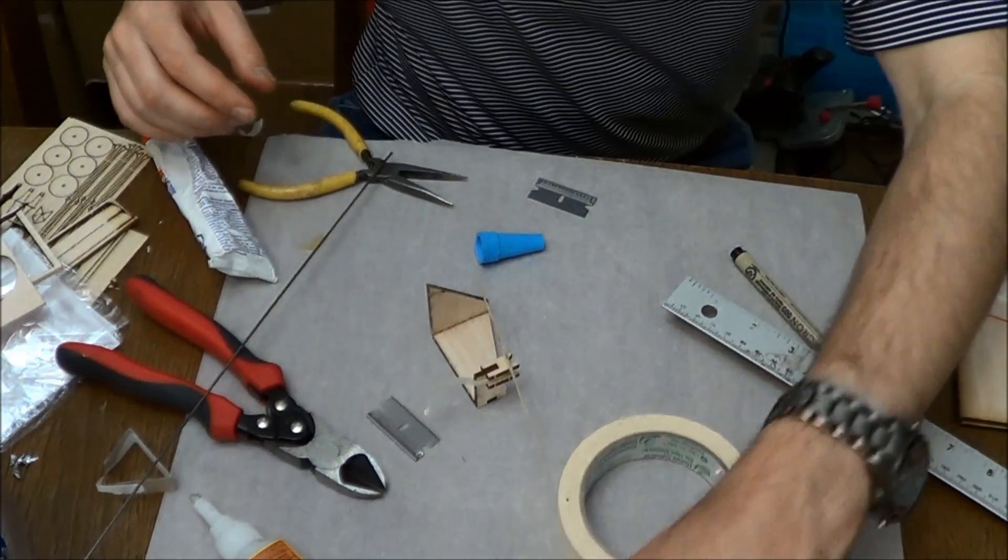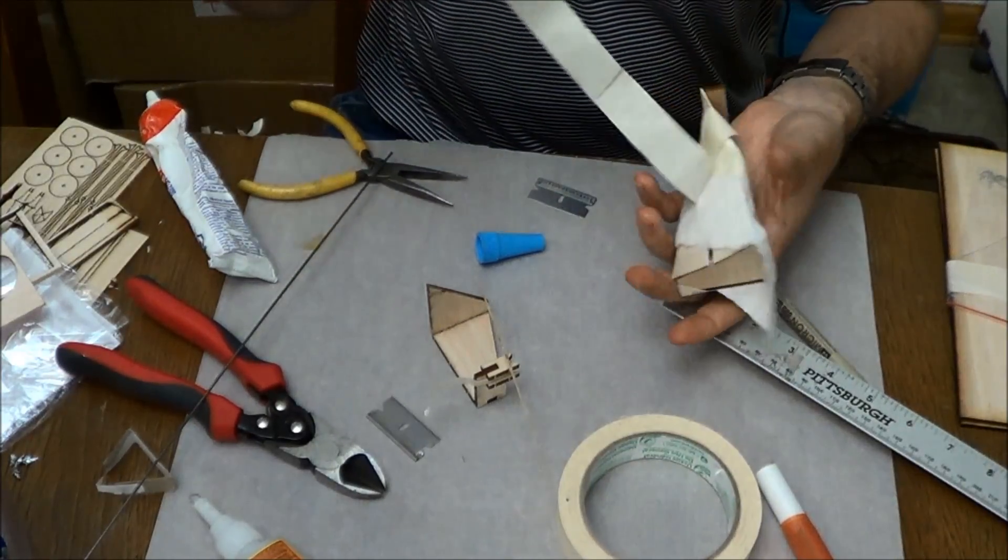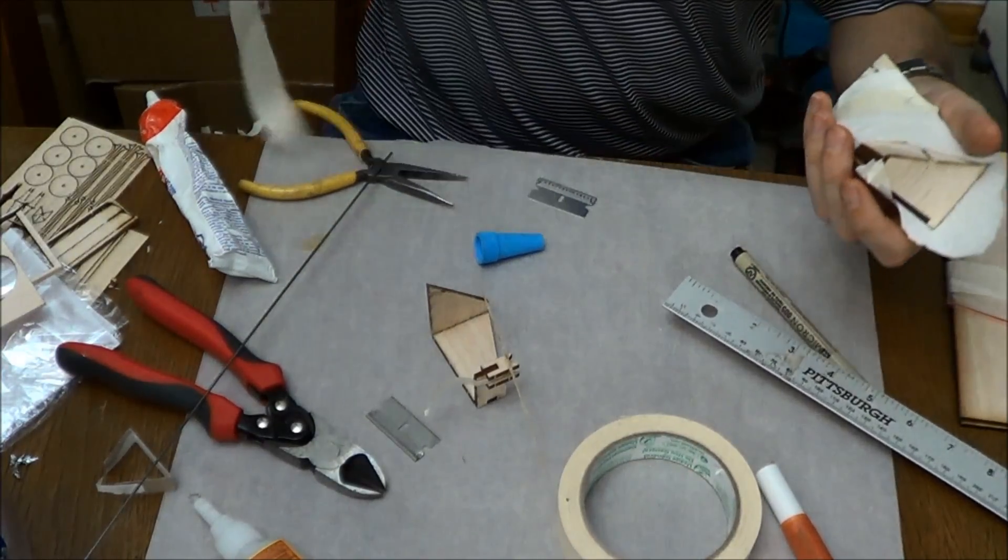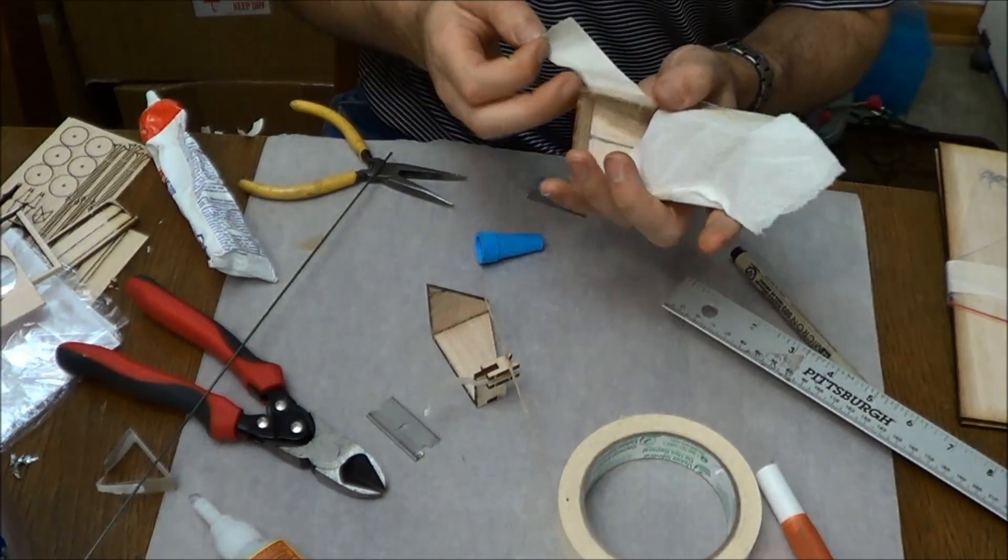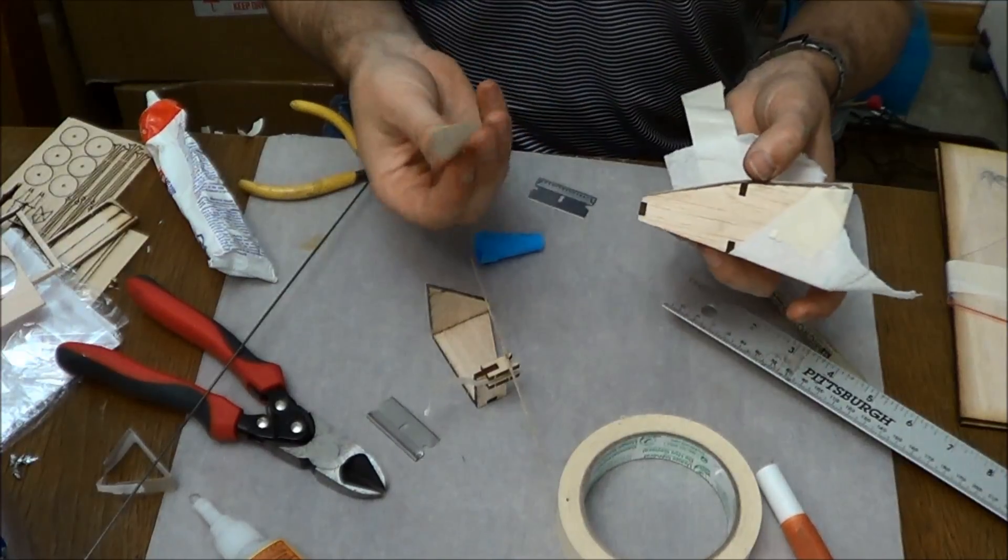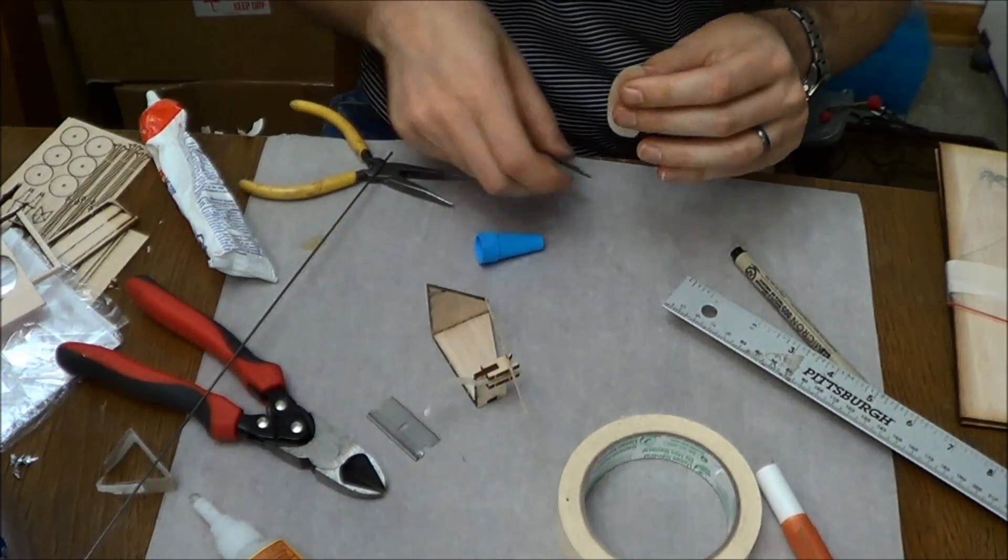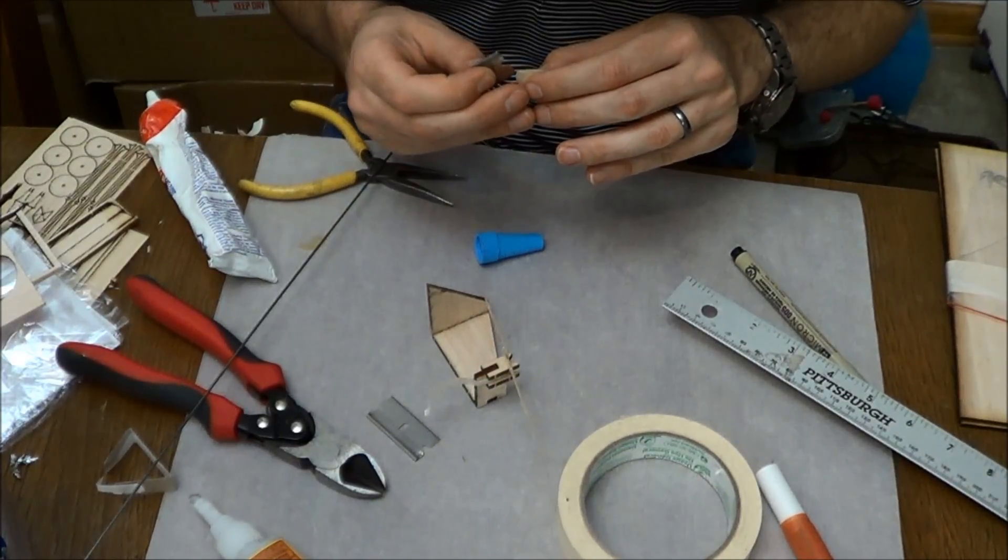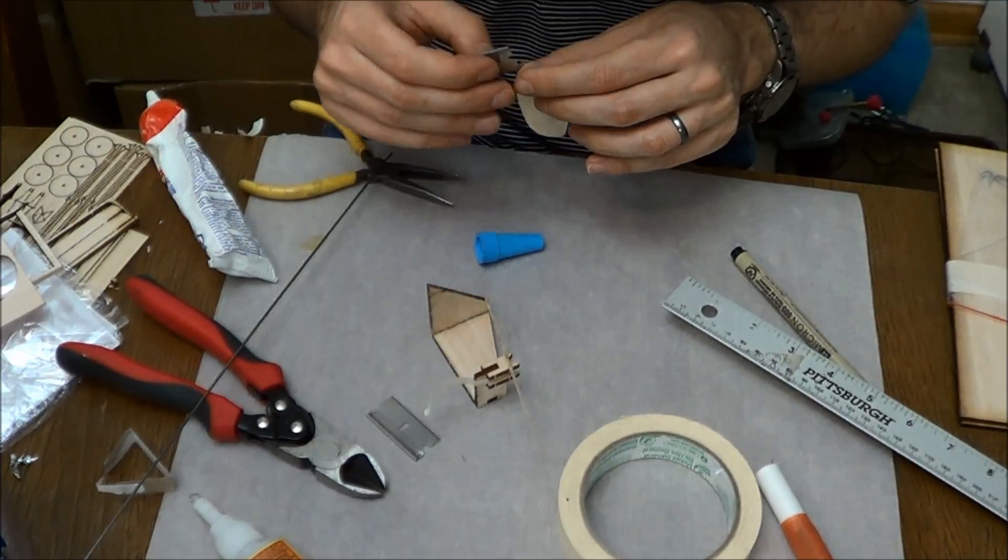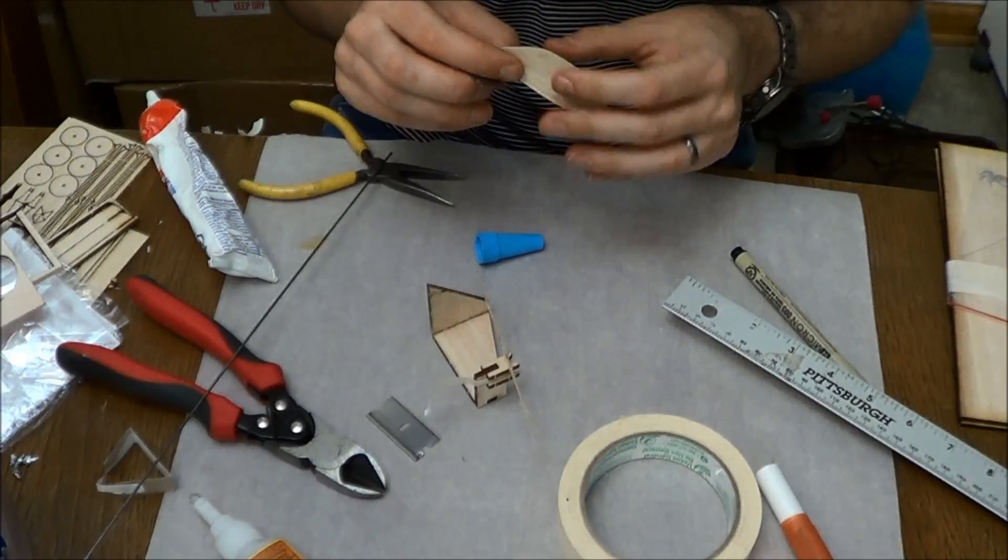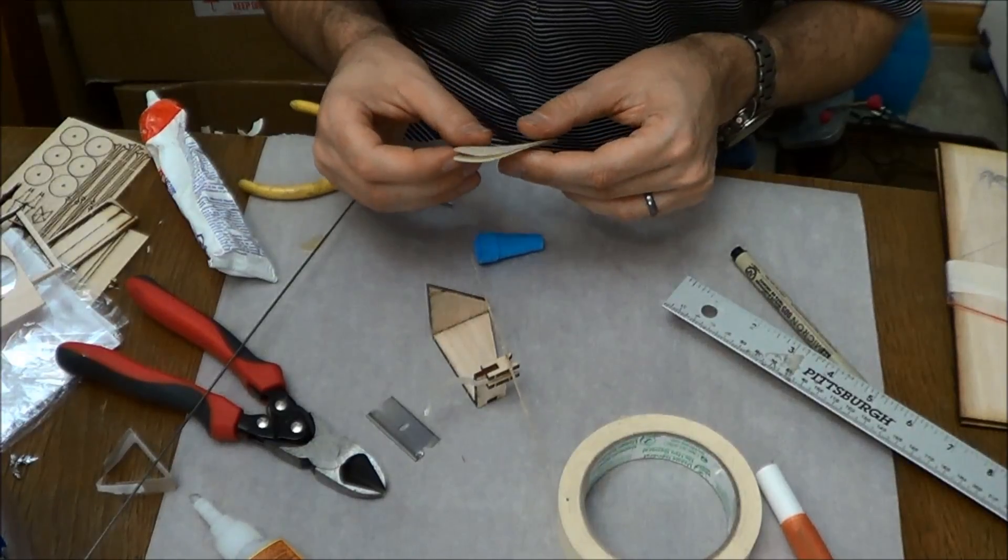Now the next thing we're going to do is unwrap our propeller blades. Remember these are really, really thin also. They're stuck together in here. Nice and dry. And what you're going to have to do is gently tease these apart because we pressed them in there pretty good. And so you just want to, there we go. At that point they snap apart.